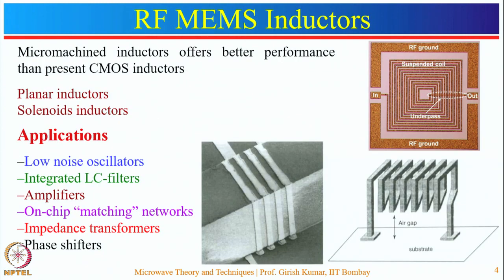The next type of component is the RF-MEMS inductor. The most important properties of RF inductors are the inductance value, quality factor, and self-resonance. Among these, the quality factor is the most critical parameter. In the case of a voltage controlled oscillator, phase noise is the critical parameter and it should be low. The phase noise of the VCO is given by the inverse of the square of the quality factor.